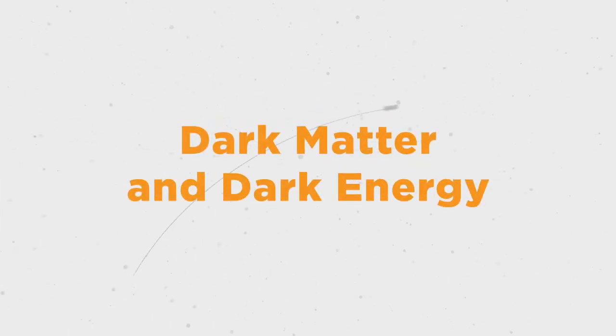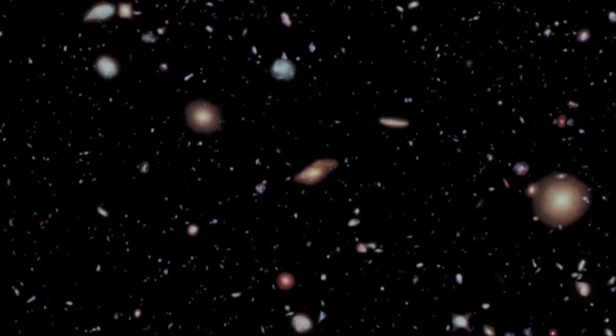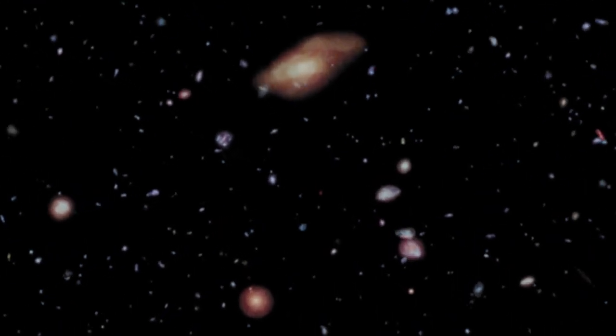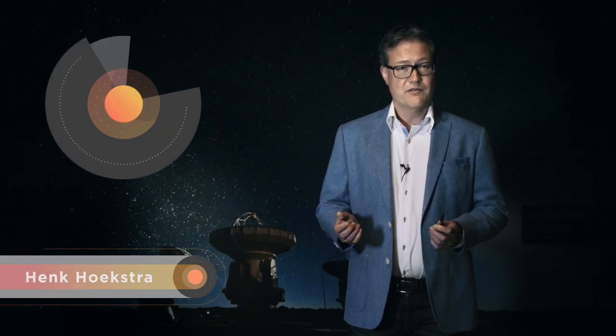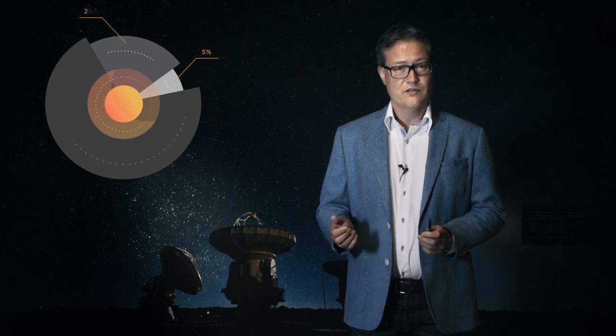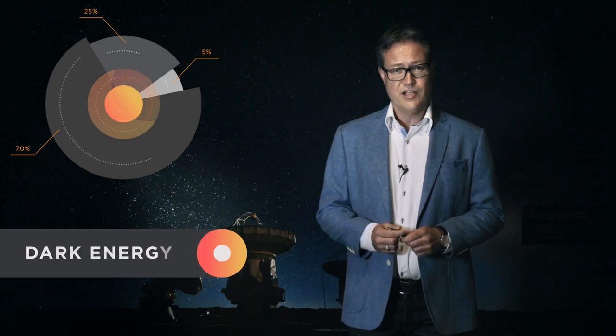Dark matter and dark energy. Deeply studied for centuries, the universe still hides plenty of secrets. Even its composition remains a mystery. The Earth, the planets, the sun, stars, galaxies — what is the universe made of? One of the most surprising discoveries of the last century is that ordinary matter makes up only 5% of the universe. 25% is made of a mysterious substance called dark matter, and the remaining 70% is made of a mysterious form of energy called dark energy.